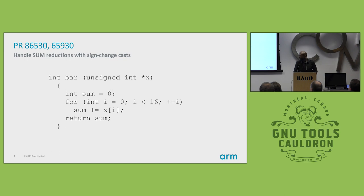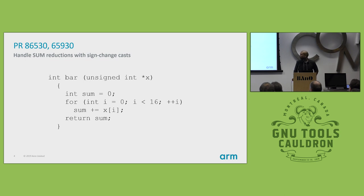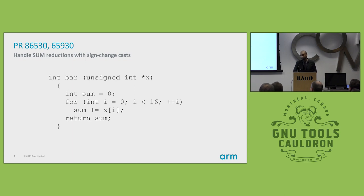As an example of one thing we're going after: this is a very simple loop doing an addition — a reduction essentially. But because of the sign change in the reduction, GCC doesn't factorize it at all. When you're vectorizing, you don't really care about overflow, so you can just ignore the sign overflow and factorize it. We have a patch upstream for this going through the review process. This already gives about 6% increase on SPEC INT — a tiny change but a large performance increase.